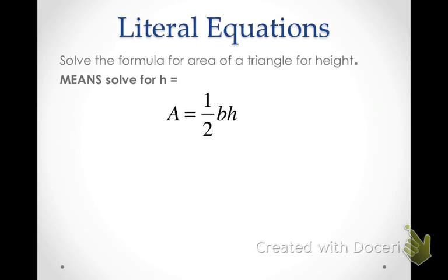In this first example, we're going to solve the formula for area of a triangle for height. We're going to solve it for height, which means we're going to get the height variable alone — here it would be h. So we need to move the 1/2 and the b away from h. First we're going to get rid of any coefficients out front, which would be this 1/2 here.